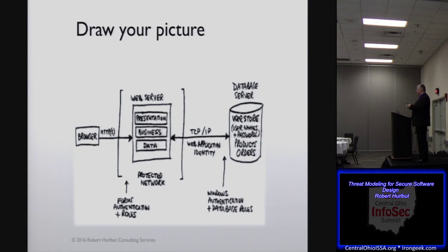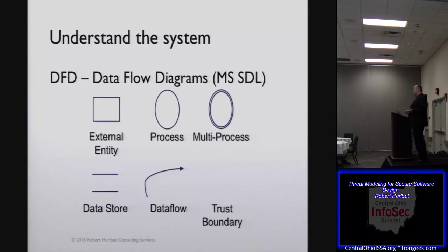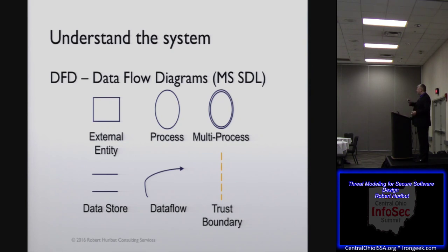Another thing you can use are data flow diagrams. There's some nomenclature for these — the entities, the processes, stores, and trust boundaries. Whatever you choose, come up with a simple way that you can communicate with others: here's what's going on, here's how things communicate with each other. The reason we focus on data flows is that when data flows from one entity to another or one process to another, that actually turns out to be one of our most vulnerable places.